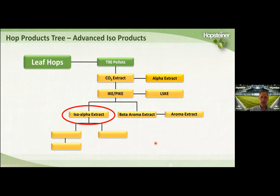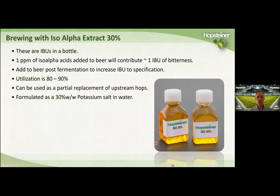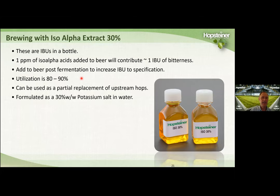Now we'll talk about our isomerized post-fermentation hop products: IsoExtract 30%. IsoExtract 30% is simply a 30% solution of iso-alpha acids formulated as a potassium salt in water — pure iso-alpha acids with little to no hop oil, no beta acids, no alpha acids. These products are typically added post-fermentation for bitterness adjustment. One ppm of iso-alpha acid added to the beer contributes about one IBU of organoleptic bitterness. Utilization is very high: usually 80 to 90% of the iso-alpha acids you add will get into the beer. It can be used as a partial replacement for upstream hopping.